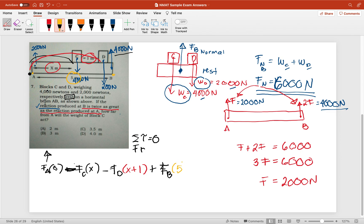That should equal zero. So force times their distance should equal zero. The summation of all those forces. This would be zero. This would be negative 4,000x. This would be negative 2,000 times (x plus 1). And this is 4,000 times 5 equals zero.